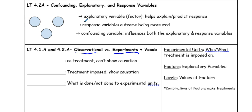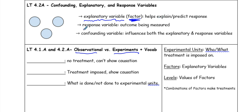Key terms you want to make sure you know: the difference between explanatory variable and factors. When we talk about experiments or observational studies, we're not just doing surveying — we're actually trying to find some evidence for why certain things occur. An explanatory variable or factor helps explain or predict a response.